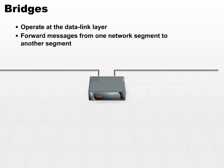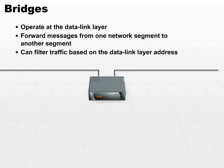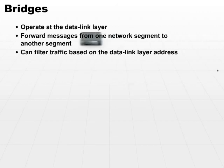As it is copying data from one network to another, it can also filter the traffic based on that data link layer address. So again, it is used to bridge two networks.